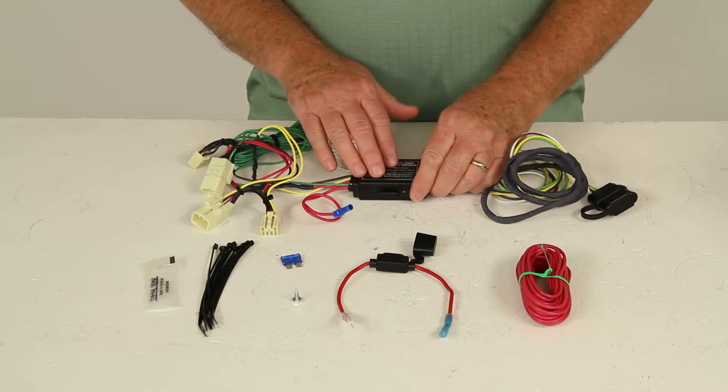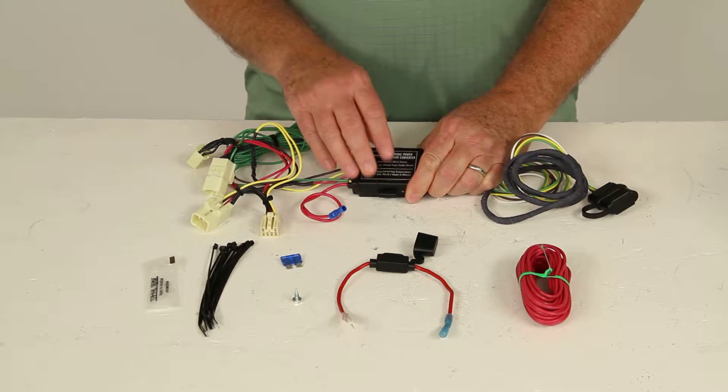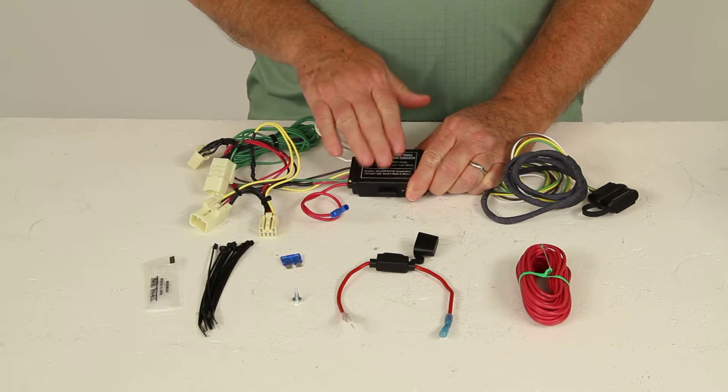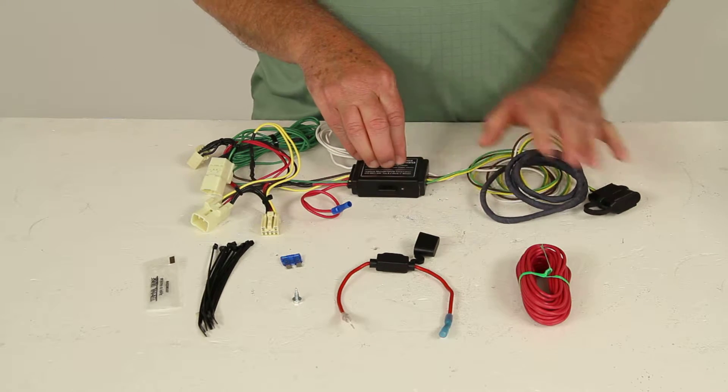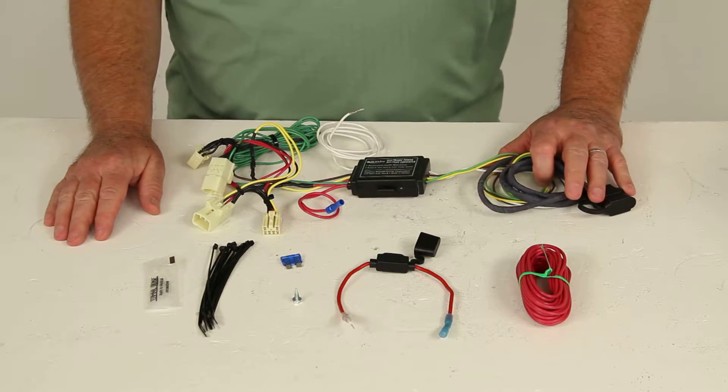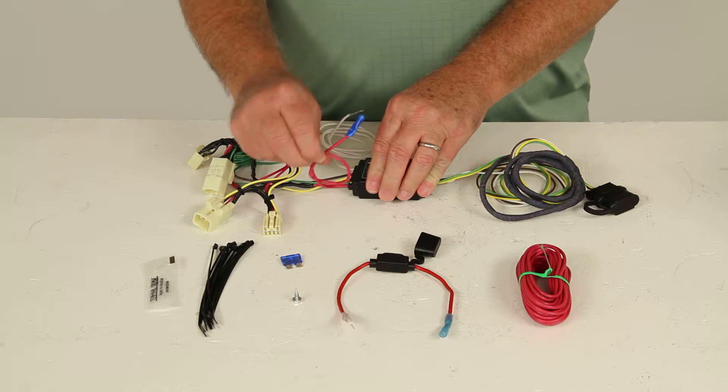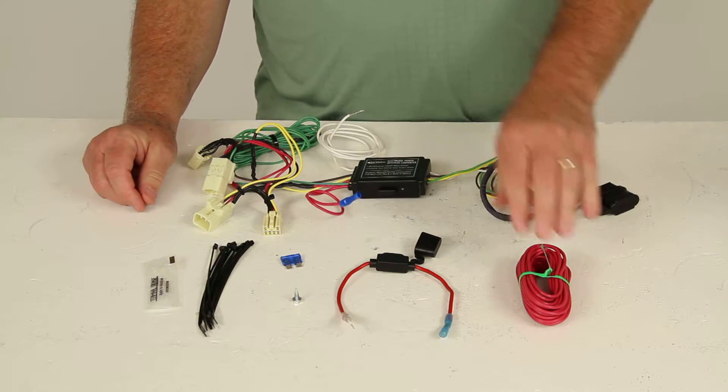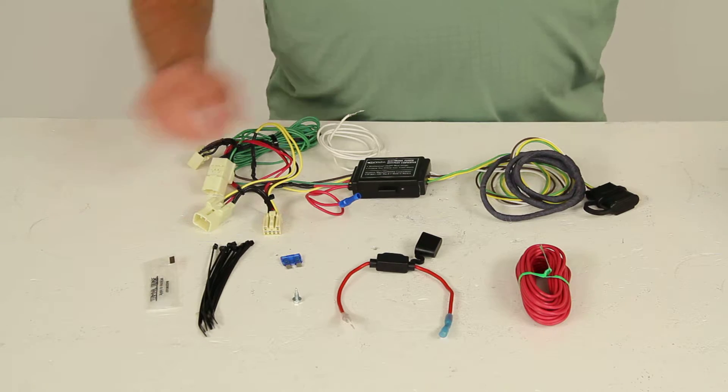So basically this is a powered converter module which will adapt your vehicle's wiring system to work with the trailer. This will safeguard the vehicle's wiring system by pulling power for your trailer lights directly from the vehicle's battery, not through the existing wires on the car. So it protects those. Now you do need to run an extra wire to the battery. This wire here using this extra length of wire, you run this to the battery to power this module.